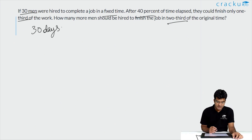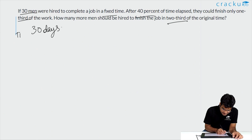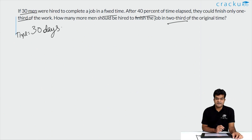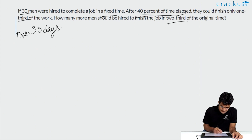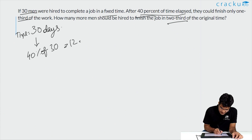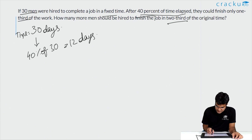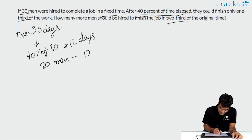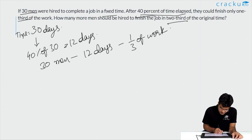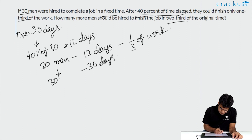Let us assume the required time is 30 days. We assume 30 days because the problem involves one third and two thirds, so a good multiple of three is a good start. After 40% of 30 days, that is 12 days, they could finish only one third of the work. So 30 men in 12 days finished one third of the work, which means 30 men would finish the entire work in 36 days, and one man would finish the entire work in 36 × 30 days.